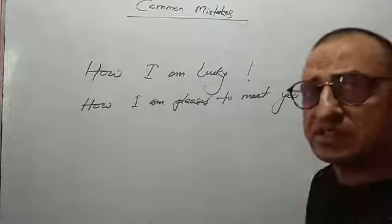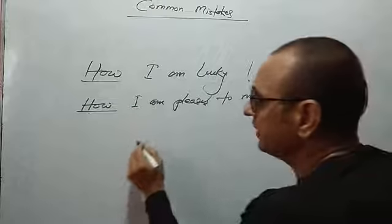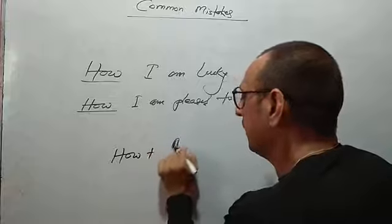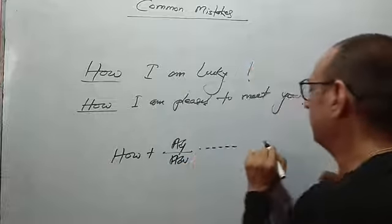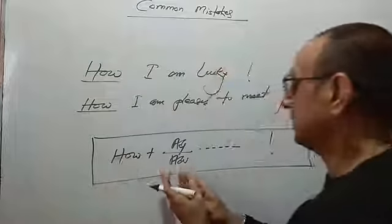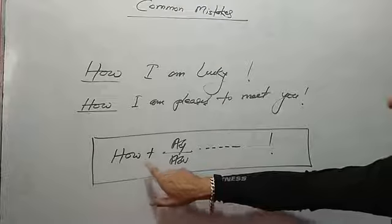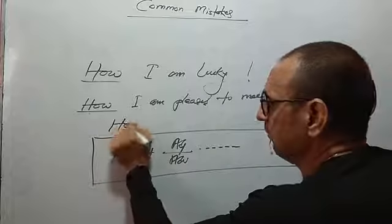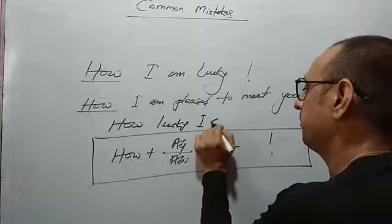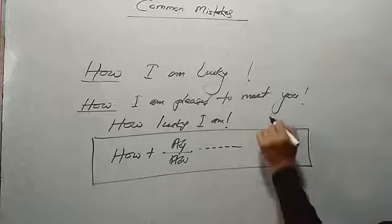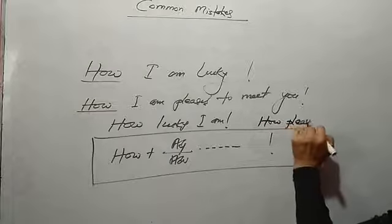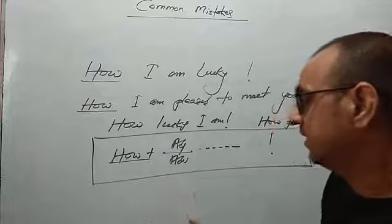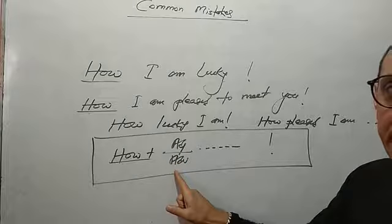In all these exclamatory sentences starting with 'how,' we need to use an adjective or adverb immediately after it. So instead of saying 'How I am lucky,' we say 'How lucky I am' — this is correct. Similarly, 'How pleased I am to meet you.' The structure is: 'how' + adjective/adverb immediately. I hope you have got this one.